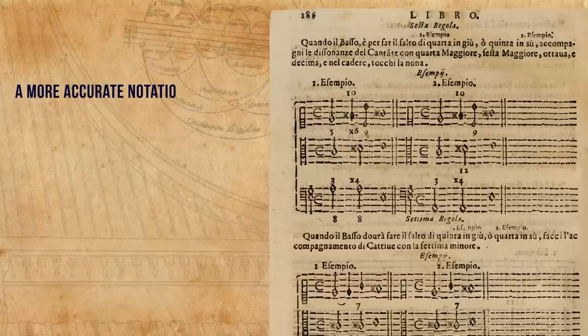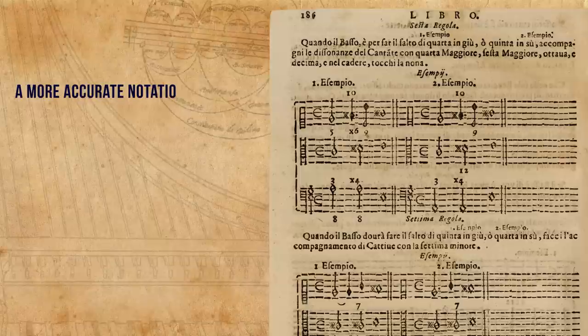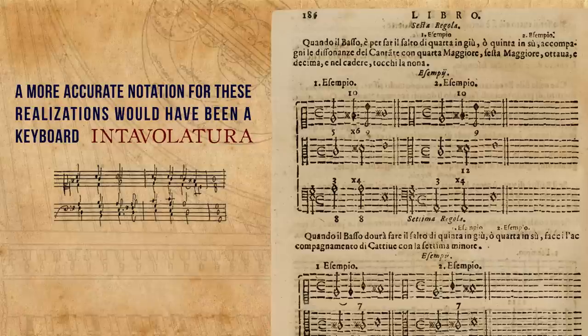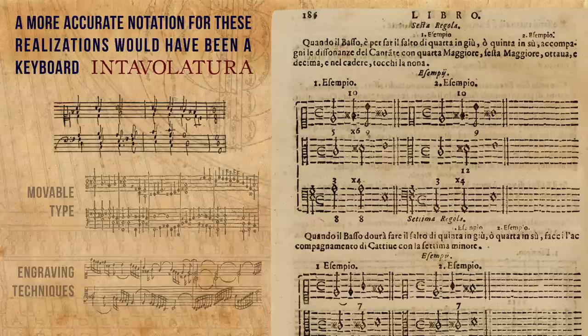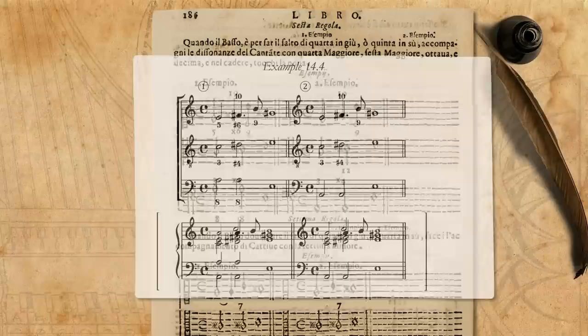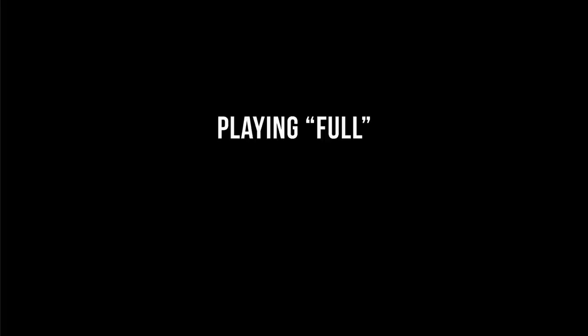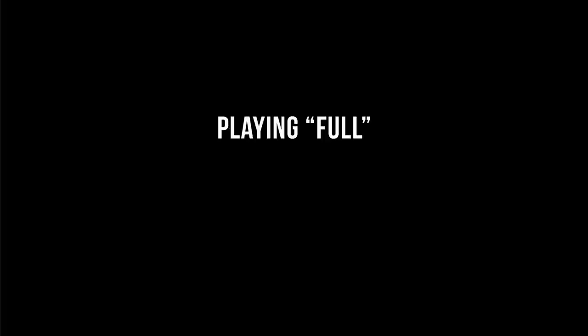But regardless of the trills, frustratingly, this short score notation is sometimes a bit ambiguous. A more accurate notation for these realisations would have been a keyboard intavolatura — the 16th and 17th century equivalent for the modern keyboard score. But the printing of intavolature, whether with movable type or engraving techniques, was rare and complicated in the second half of the 17th century in Italy. This fact was probably what made Penna choose this special notation solution. For your convenience, in some cases we added possible realisations in a modern keyboard score in our edition.